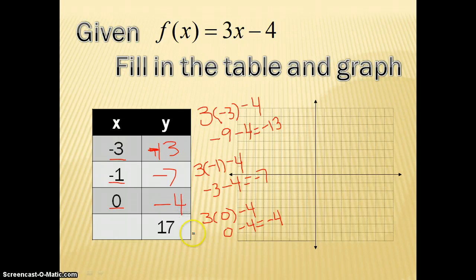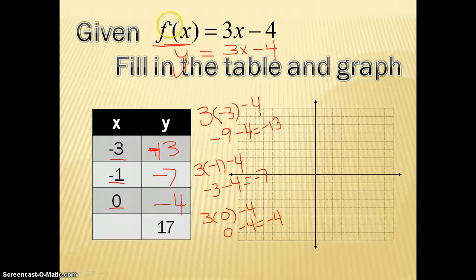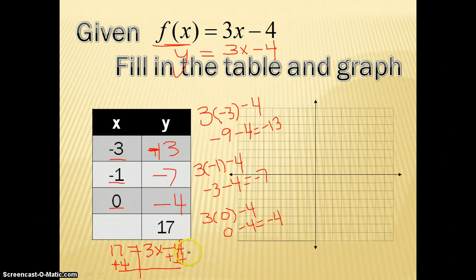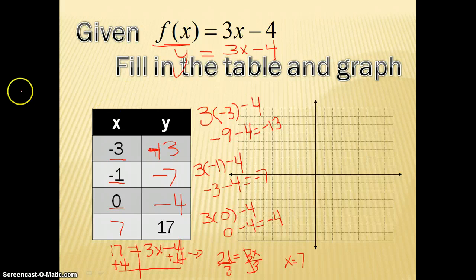This one's a little different because it says y is 17. Remember, f of x is the same as y — so this is y equals 3x minus 4. We're going to plug 17 in for y: 17 equals 3x minus 4. Add 4 to both sides — 17 plus 4 is 21, equals 3x. Then divide both sides by 3, and x equals 7. I would then graph this on my graph.